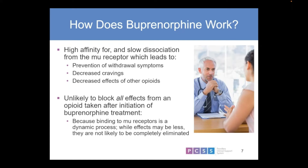Buprenorphine also decreases the effect of other opiates. With its high affinity, if they use a full opiate on top of it, they won't get the euphoric effect they had before. However, it is unlikely to block all effects from an opiate taken after buprenorphine initiation, because binding to the mu receptor is a dynamic process. This is an important consideration as we discuss how to deal with pain problems a patient might experience while on buprenorphine.